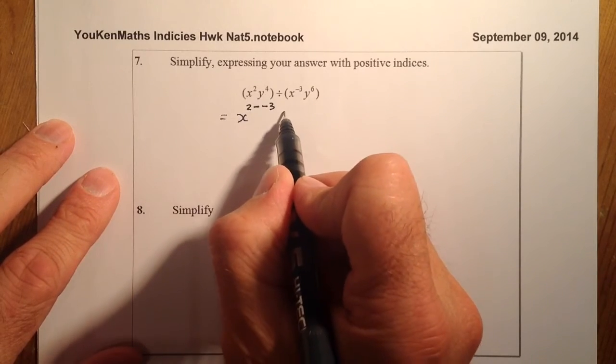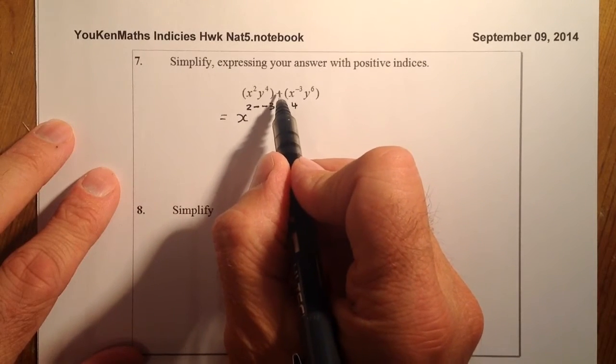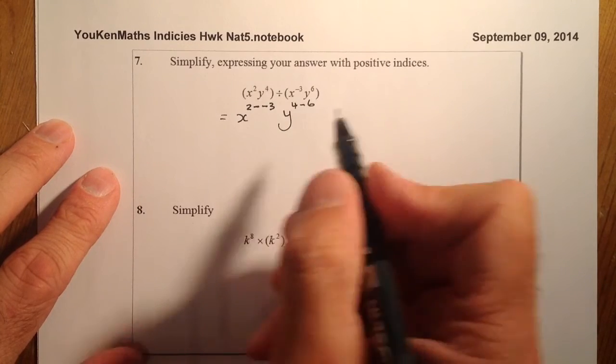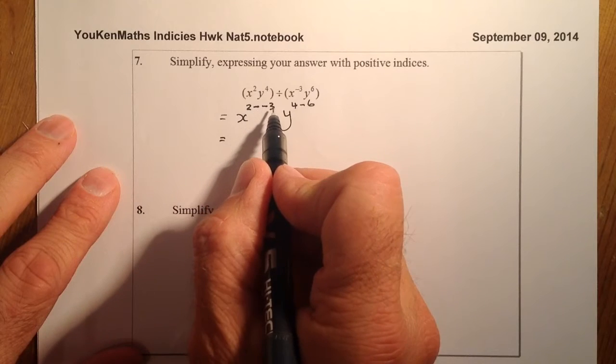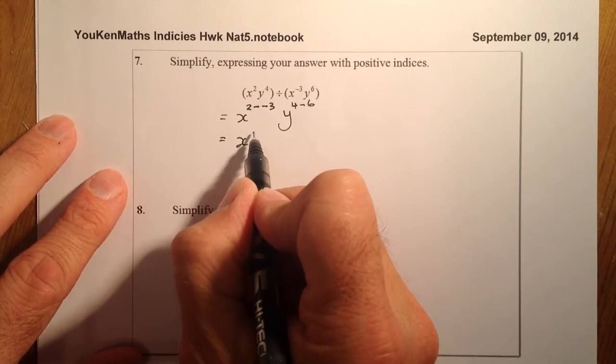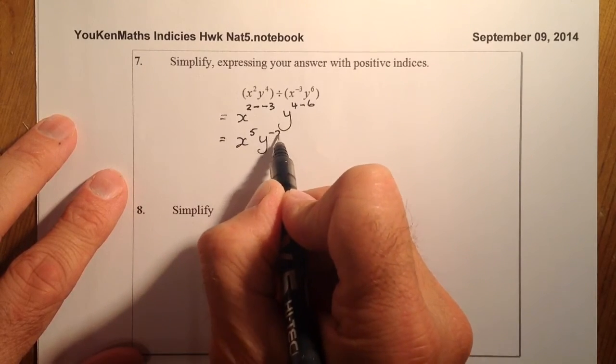I've also got y to the power of 4, and I'm going to take away 6 because I'm dividing. I can gather this up. 2 plus 3, remember the 2 minuses make a plus, so that's x to the power of 5, and that's y to the power of minus 2.